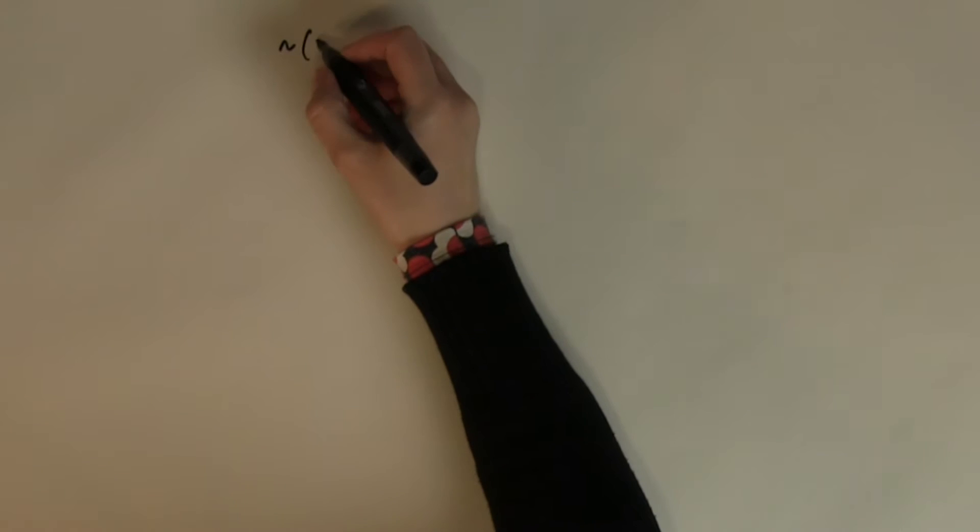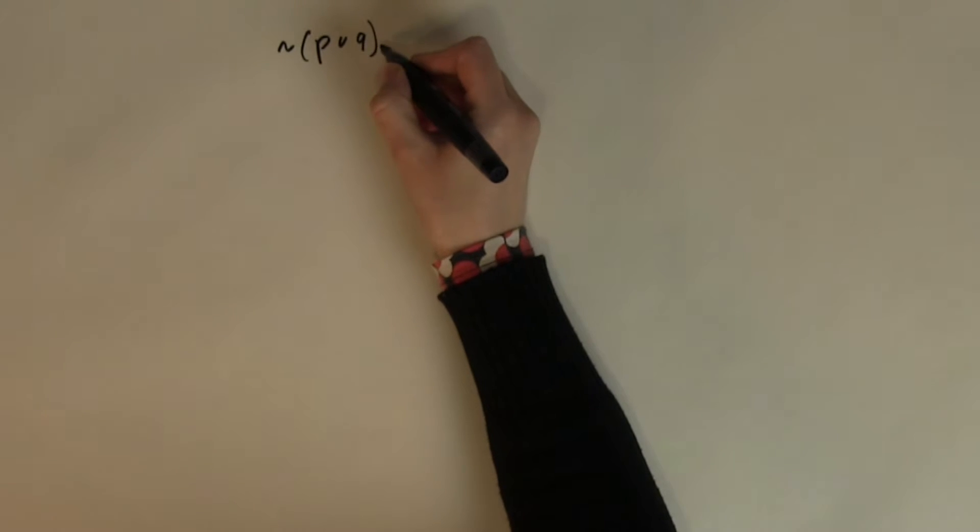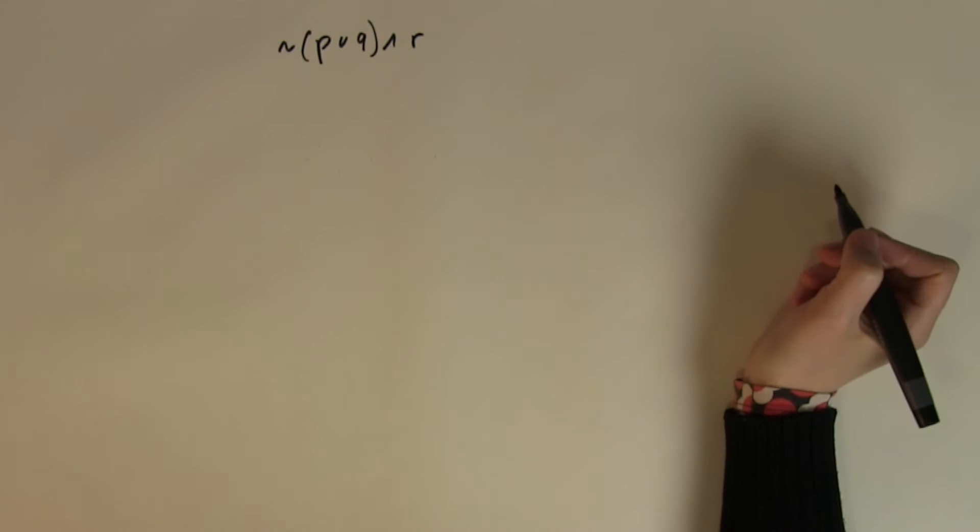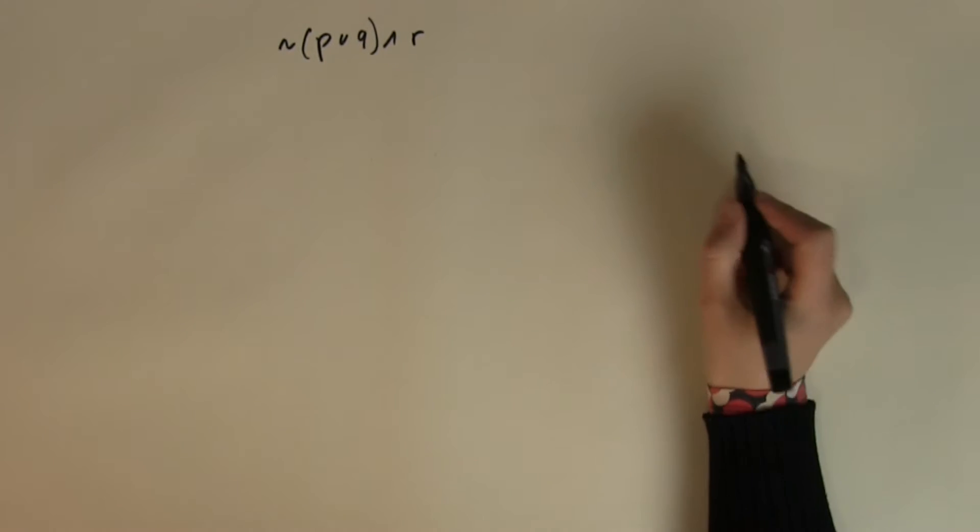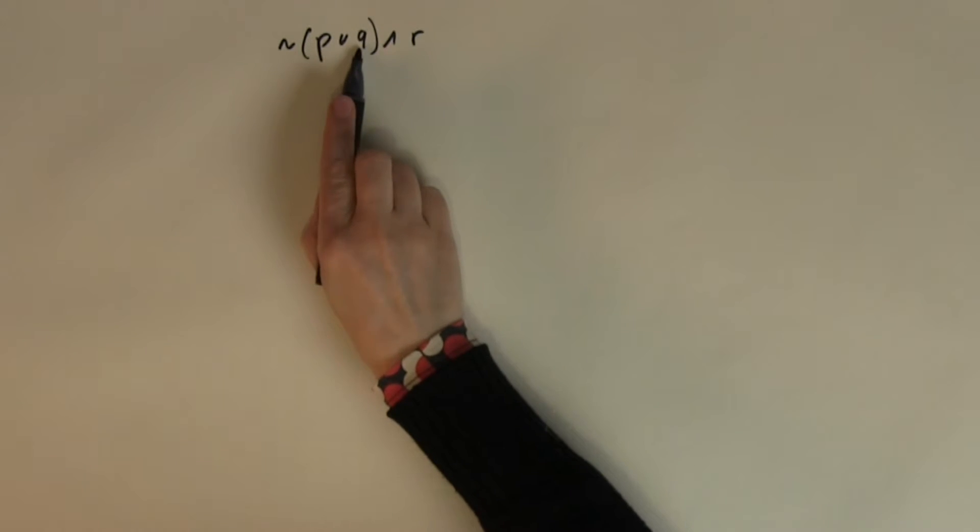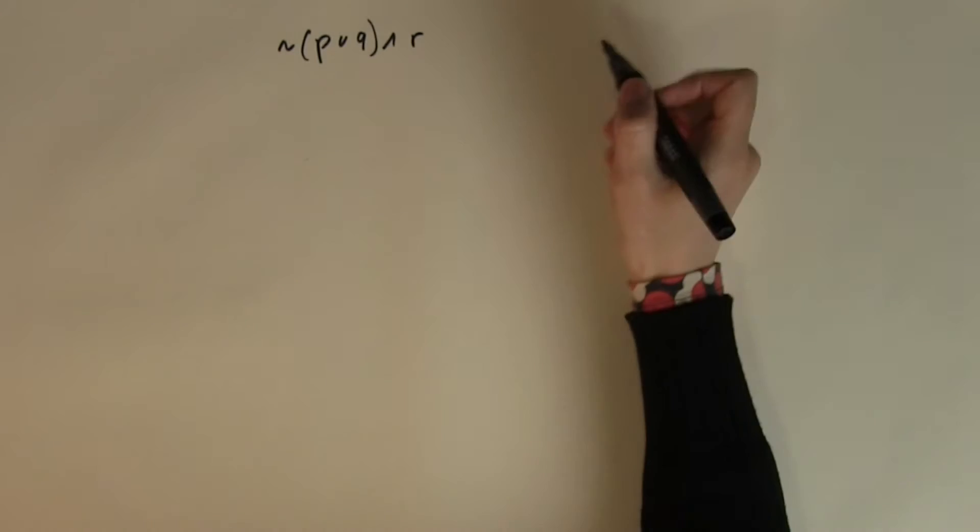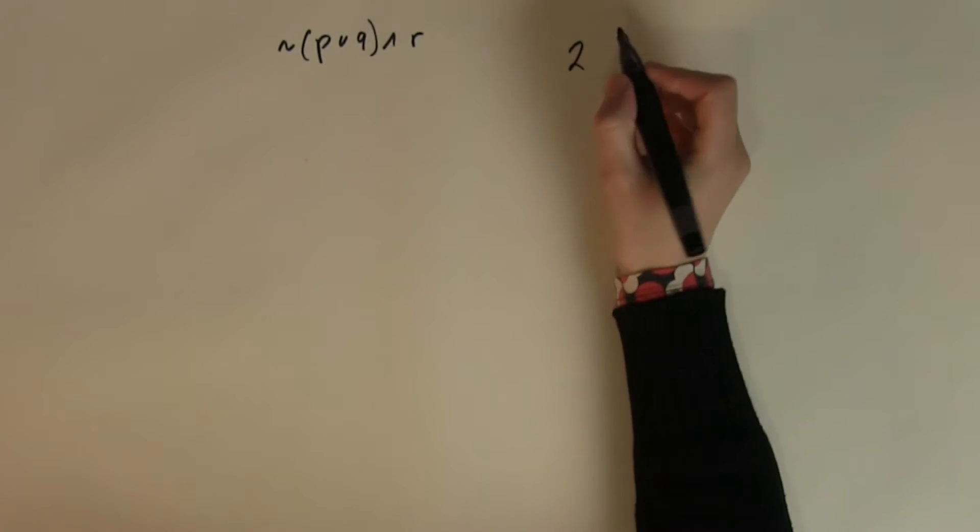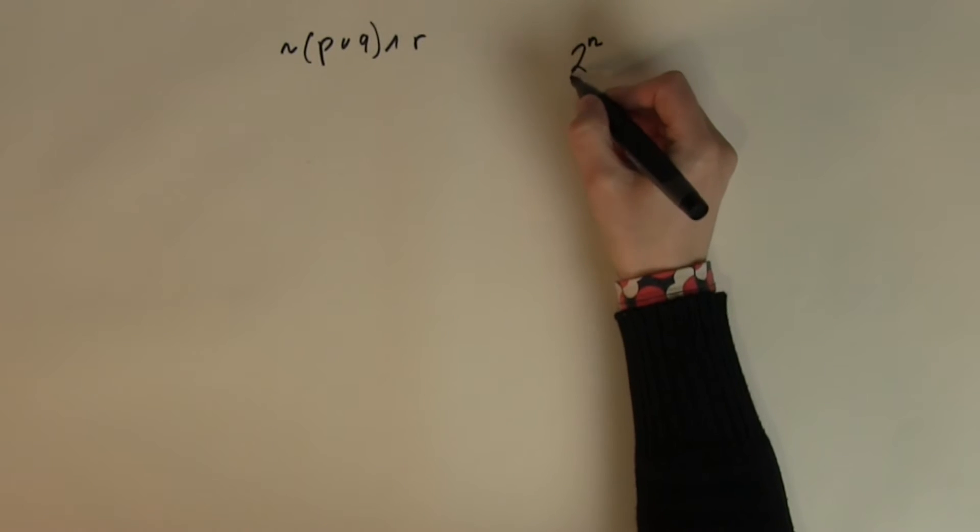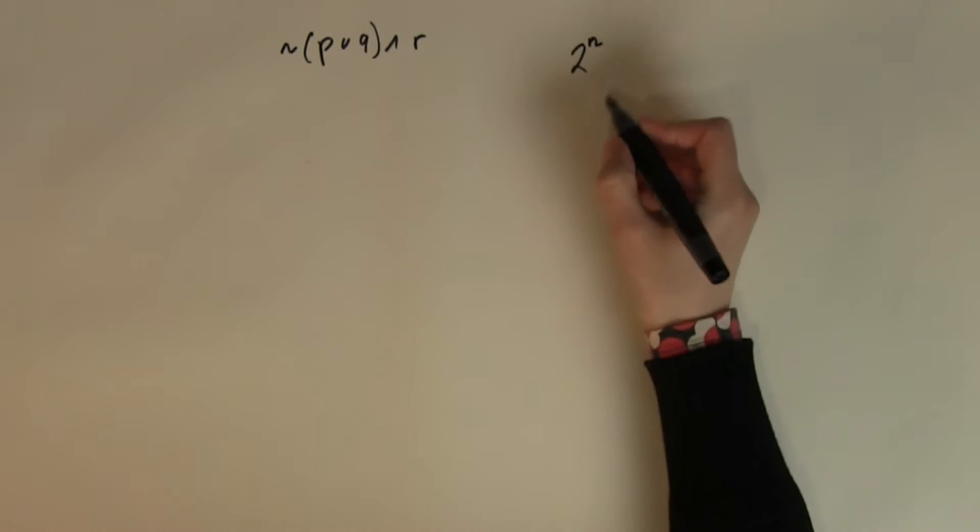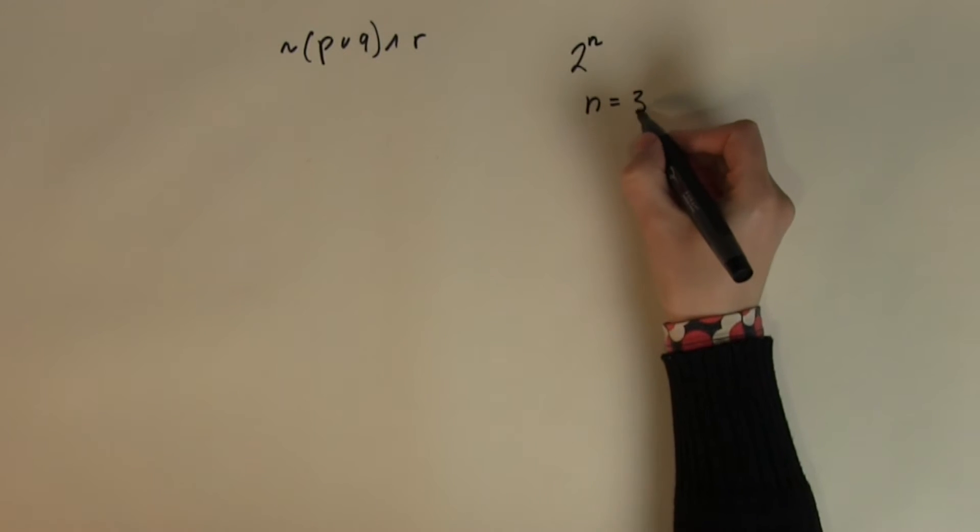Let's look at an example which is slightly more difficult: NOT, P or Q and R. In this case I have three different inputs because I have three different letters. So the number of rows in my truth table, which is calculated by 2 to the n, in this case n, the number of inputs is 3, therefore this will be 2 to the 3 which is 8.